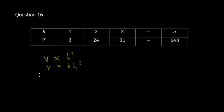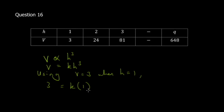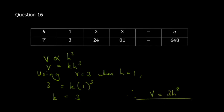Using v equal to 3 when h equal to 1, we substitute and get 3 equal to k times 1 cubed, so k equals 3. Therefore v equal to 3h cubed. This is your relation. You can use any of the corresponding values by the way.